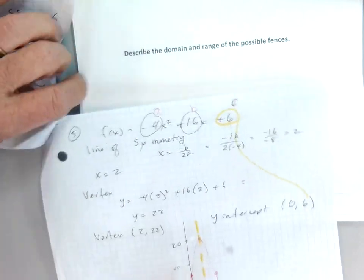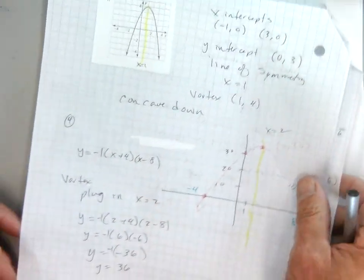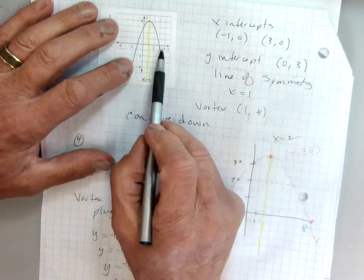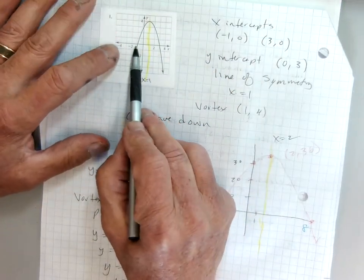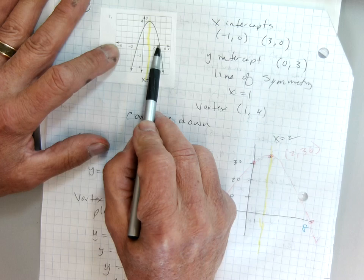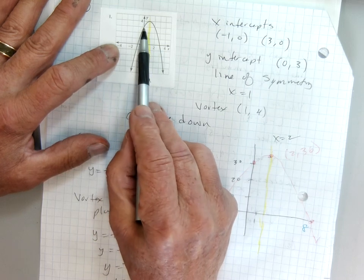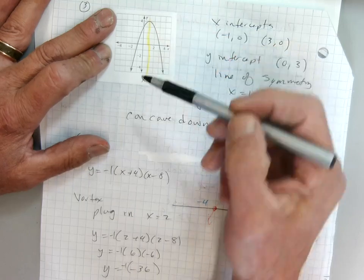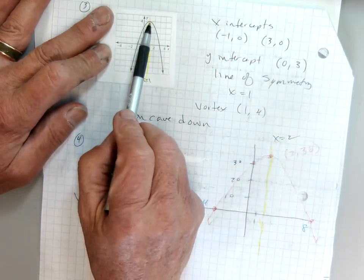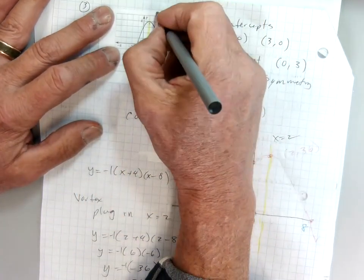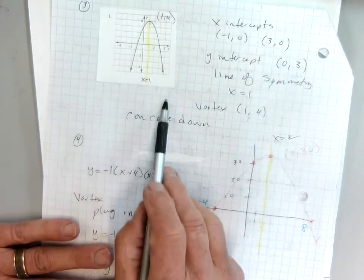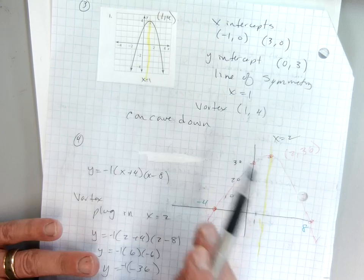Move it on to page 2. Go ahead and pause it any time you guys want. So if I look at the graph, this one's actually pretty easy. X-intercepts are there and there at negative 1, 0 and at 3, 0. The y-intercept is right there at 0, 3. The vertex is at the point 1, 4. It concaves down because it goes down. That's what concavity means.